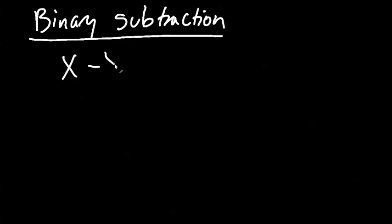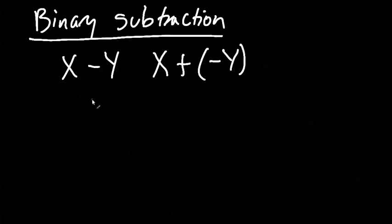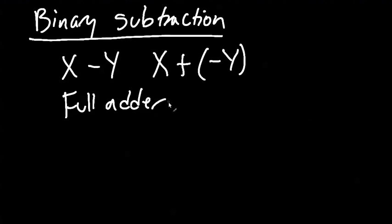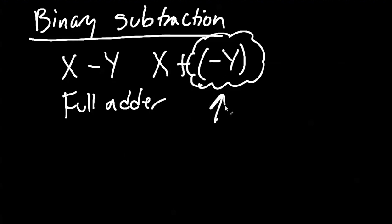Suppose I want to compute x minus y. If I want to represent that using only addition, I could say this is equivalent to x plus negative y. And that's actually what your computer does when it performs subtraction — it doesn't have any special hardware for subtraction. Your CPU has a full adder, and that is sufficient to do both addition and subtraction. So in order to do subtraction, we need to figure out how to represent a negative number.